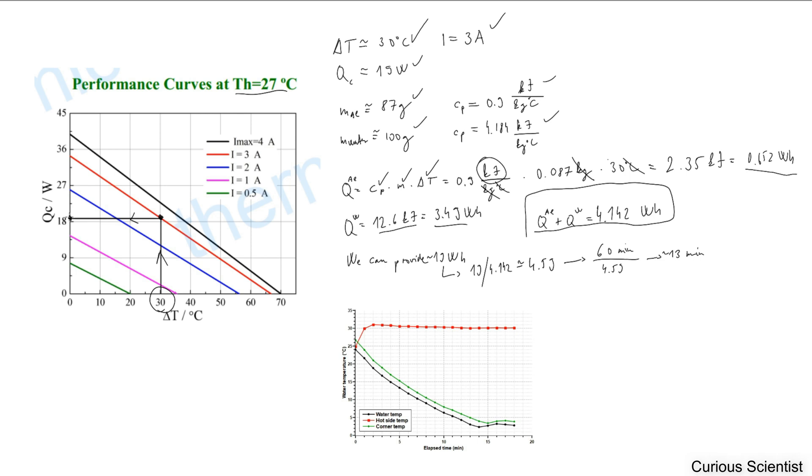We know that the heat needed to get our water plus aluminum to zero degrees is roughly 4.14 watt hours.